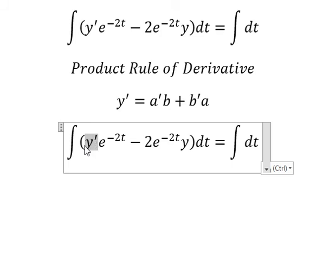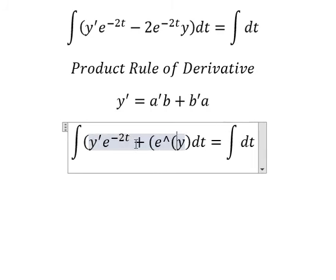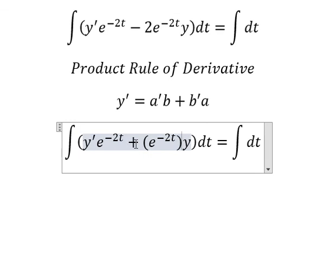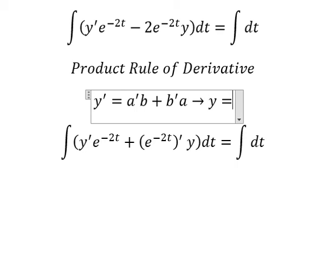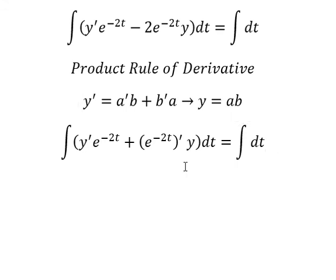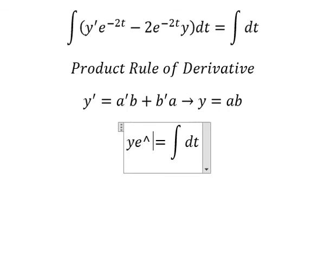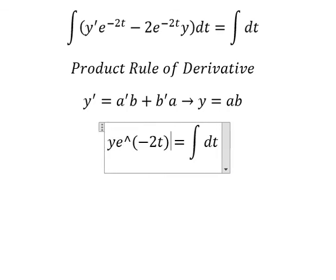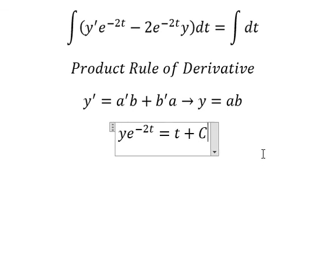So the integral of this one, we have y equals to ab. The integral of that one, we have y to the power of negative 2t. This one we have t and I will put C.